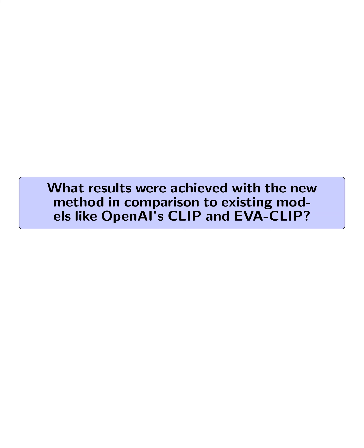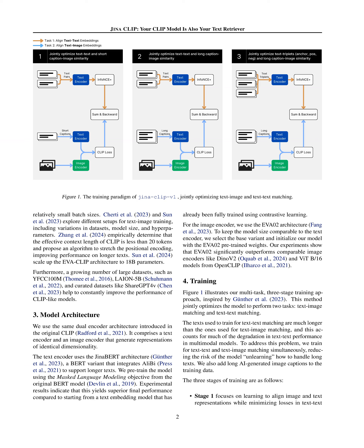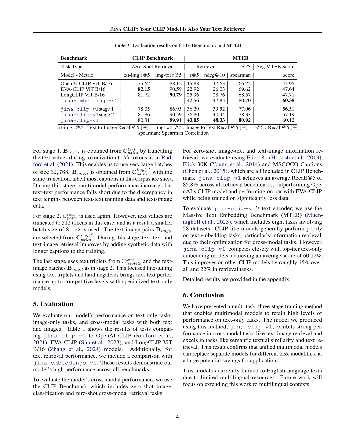What results were achieved compared to existing models like OpenAI's CLIP and EVA CLIP? The new method achieved an average recall at 5 of 85.8% across all retrieval benchmarks, outperforming OpenAI's CLIP and performing on par with EVA CLIP in cross-modal performance, while being trained on significantly less data. The text encoder achieves an average score of 60.12% on the MTEB — an improvement of roughly 15% overall and 22% in retrieval tasks compared to other CLIP models — demonstrating high performance across text-only, image-only, and cross-modal tasks.